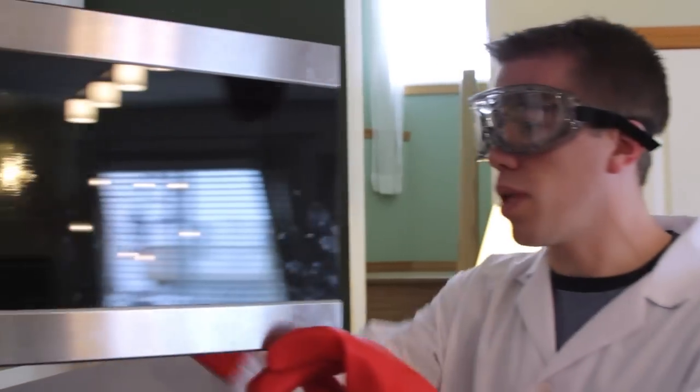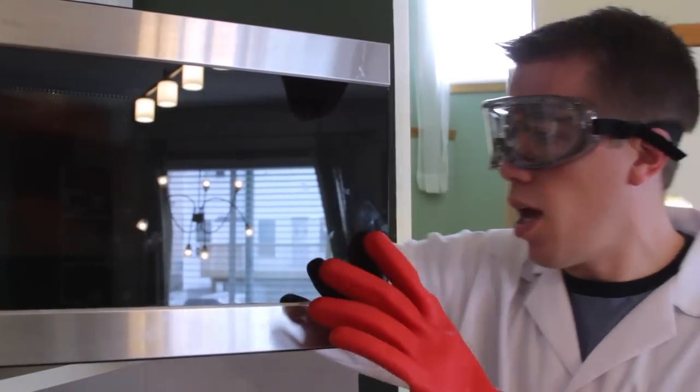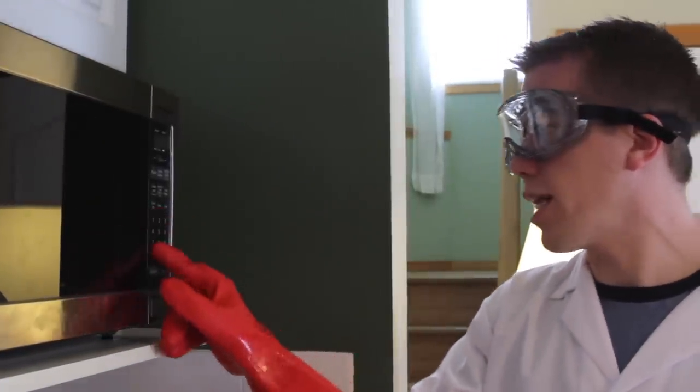The next step in our experiment is to take your grape that was partially cut, place it in the middle of your microwave, take your glass and place it over top of your grape. You're going to shut the door, set your microwave for 10 seconds, and press start.